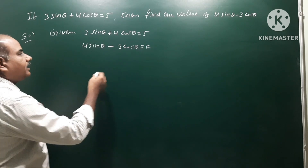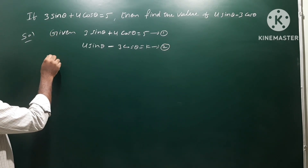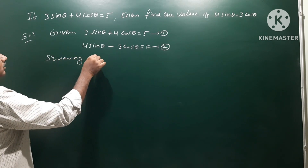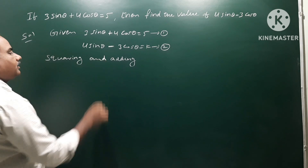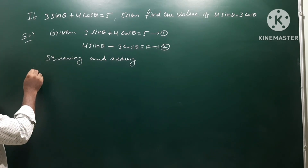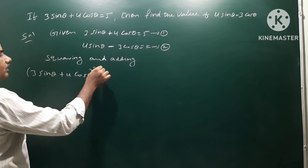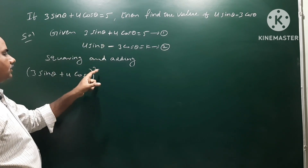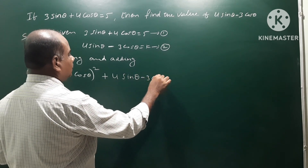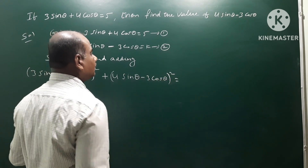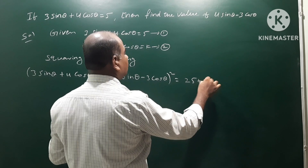So we use squaring and adding. Squaring equation 1: (3sinθ + 4cosθ)² on the left side. Squaring equation 2: (4sinθ − 3cosθ)² on the left side. Adding both — right side: 5² plus k² = 25 + k².